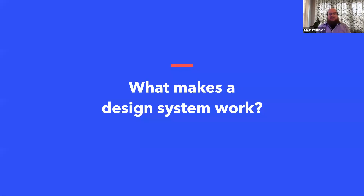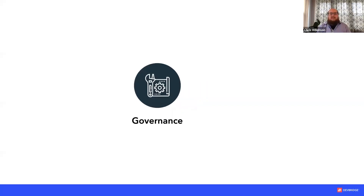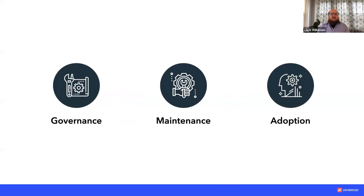Now let's talk about what makes a design system work. I think there are three pillars to get right: governance, maintenance, and adoption. These three form the legs of a stool that support a great design system. Governance is the way a design system is managed; maintenance is how it is built and developed; and adoption is how it's rolled out to multiple groups.